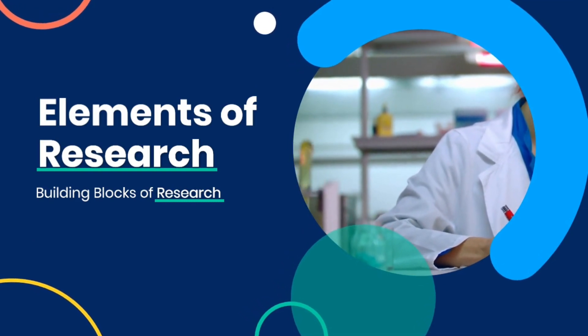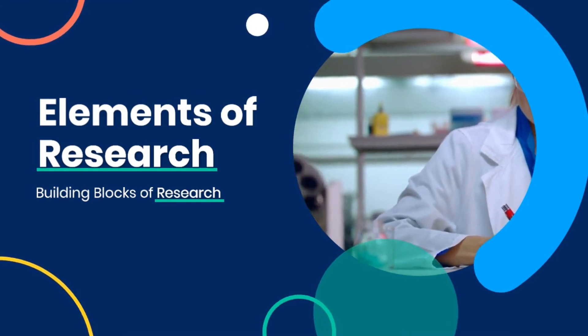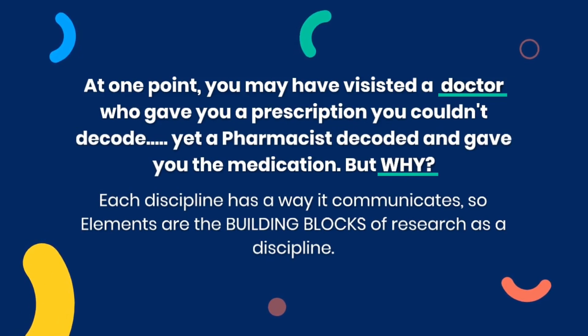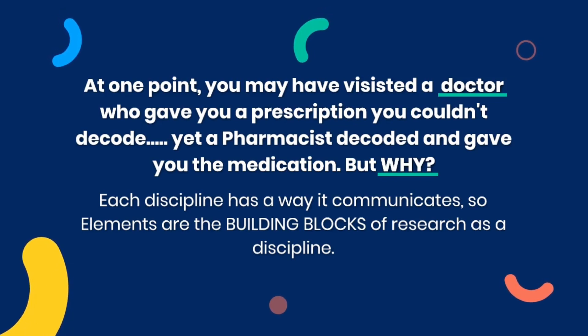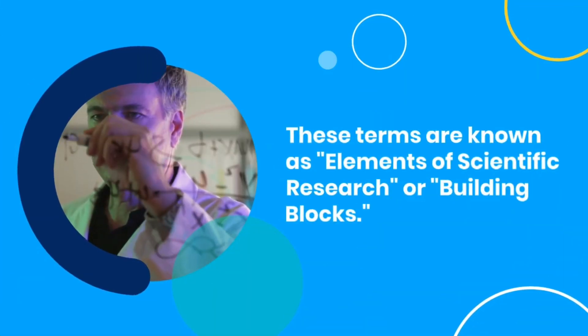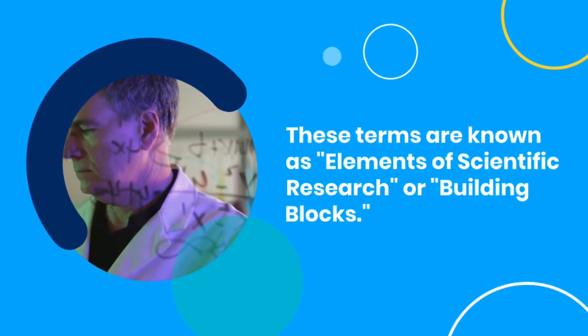Today we are going to talk about the language that researchers use. At one point in our lives we have visited a doctor who gave us a prescription we couldn't interpret, but when we took it to the pharmacist they were able to interpret it and give us medication. The reason is that every discipline has its own language. Researchers also communicate with each other using terms only understood by their fellow researchers — these terms are the building blocks of research as a discipline, called elements of scientific research.